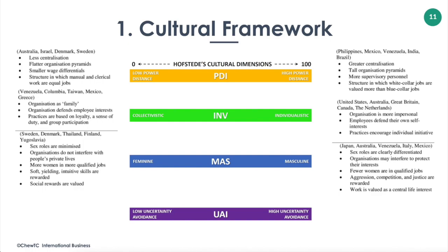Hofstede's masculinity versus femininity dimension looks at the relationship between gender and work roles. In masculine cultures, sex roles are sharply differentiated and traditional masculine values such as achievement and the effective exercise of power determine cultural ideas. In feminine cultures, sex roles are less sharply distinguished and little differentiation is made between men and women in the same job. Examples of feminine societies include Sweden, Denmark, Thailand, Finland, and New Zealand, whereas Japan, Australia, Venezuela, Italy, and Mexico are examples of masculine societies.